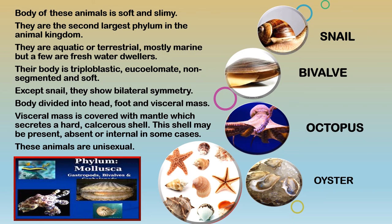Slightly higher molluscs have the body divided into head, foot, and visceral mass — the mass of respiratory and digestive systems within the body. This visceral mass is covered with a mantle which secretes a hard calcareous shell. The shell may be present, absent, or internal in some cases. These animals are unisexual, and the calcareous shell is made up of calcium carbonate to provide hardness to their soft body.